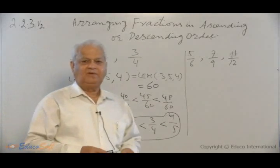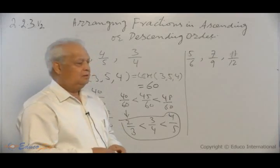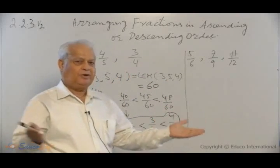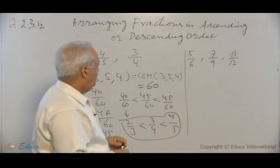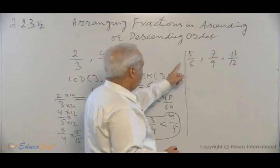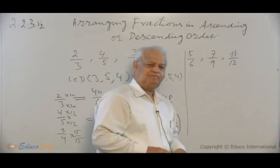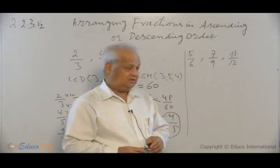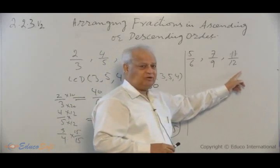Let's take one more example where the denominator LCD is not necessarily equal to the product of all the numbers. Here, the denominators are 6, 9, and 12. So we need to find the LCD first. In this case, they are not mutually prime.